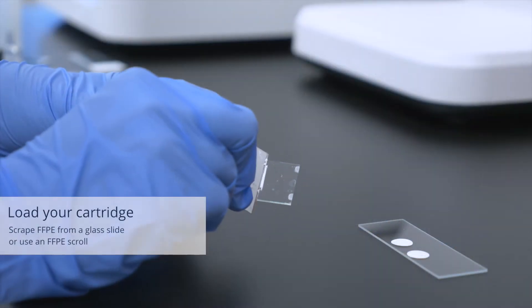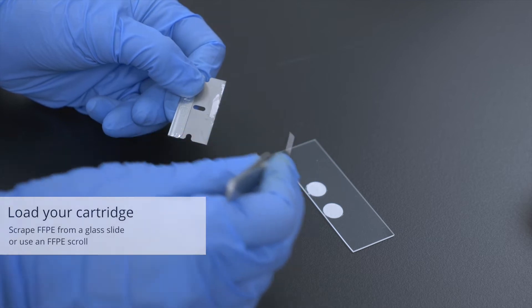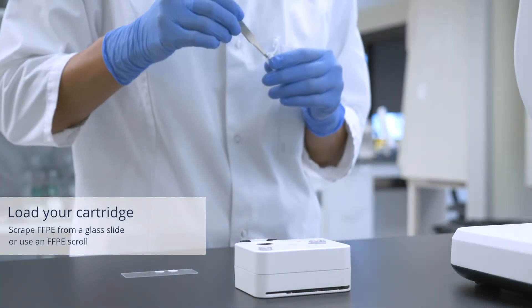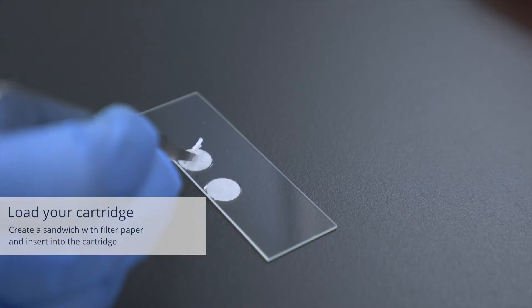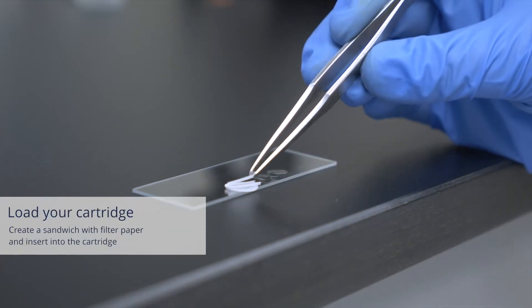To run a test, either scrape an FFPE section from a glass slide or use an FFPE scroll. Simply place your sample on a piece of wetted filter paper, create a sandwich, and place the sample inside the cartridge.